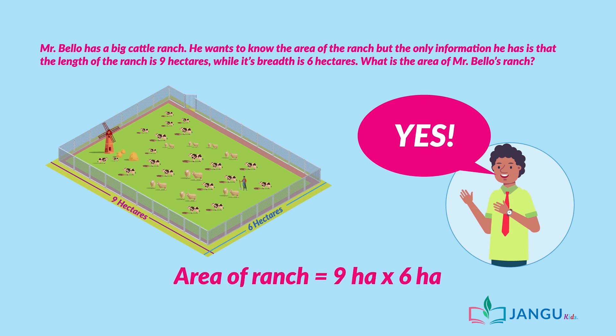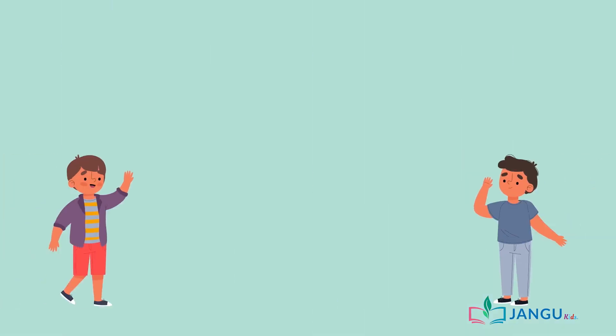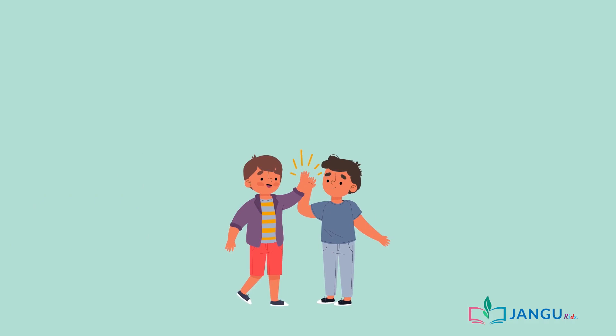The area of the rectangular ranch is 9 hectares times 6 hectares. Therefore, Mr. Bello's cattle ranch is 54 square hectares. High fives all around for coming this far.